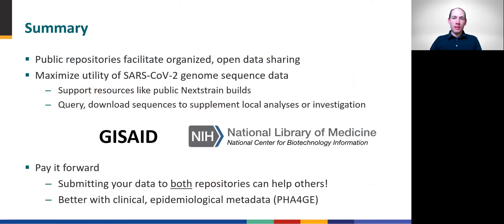In summary, collecting and openly sharing SARS-CoV-2 genome sequence data ensures the greatest benefit to both local and national public health efforts. These sequence data are primarily organized in two popular repositories that can be efficiently queried to supplement local analyses, as well as support large open source projects to track virus evolution, such as Nextrain and Pangolin. Therefore, depositing sequence data and associated metadata into public repositories should be an integral step in the SARS-CoV-2 sequencing workflow of every laboratory. While the details of submission are outside the scope of this module, some links to helpful resources are provided on the toolkit webpage, including information about SARS-CoV-2 contextual metadata standards from the Public Health Alliance for Genomic Epidemiology, also known as PHAGE.